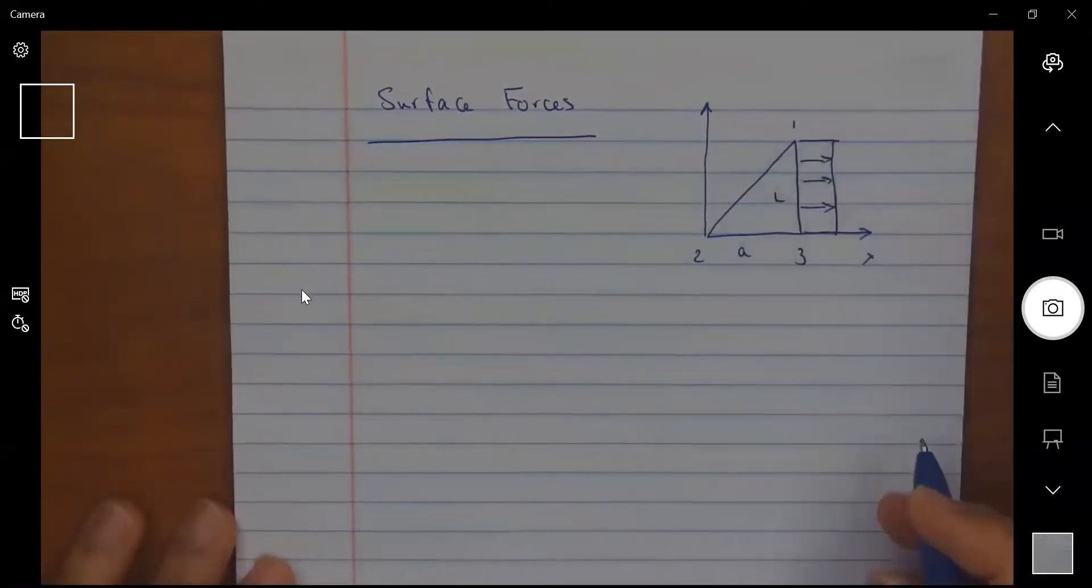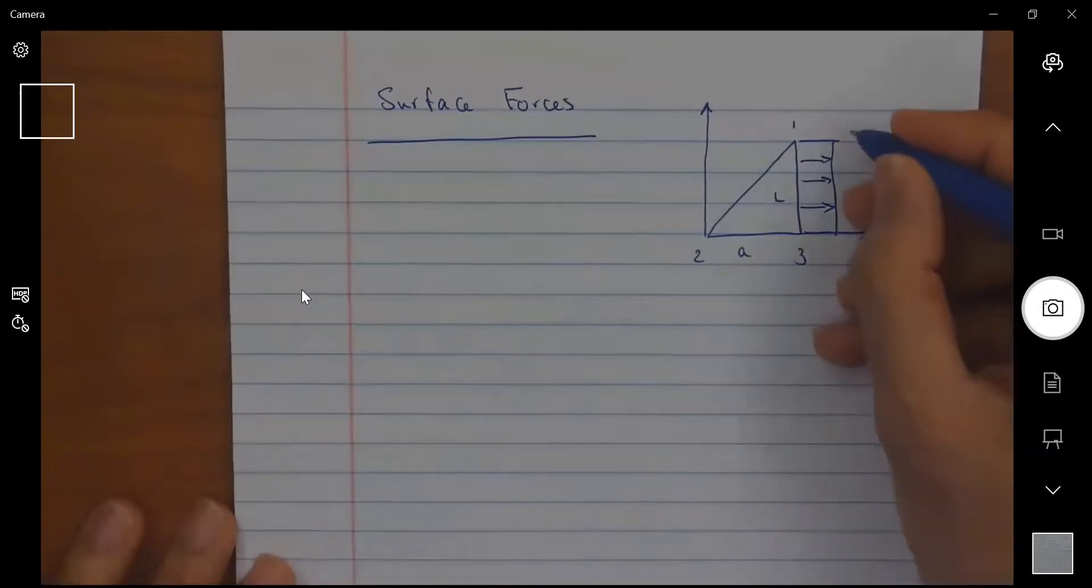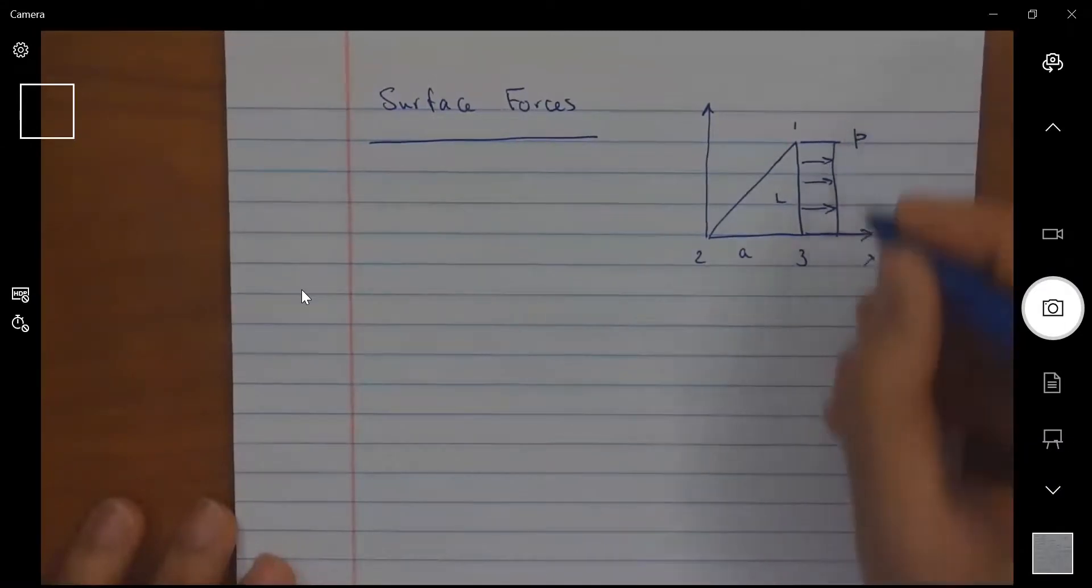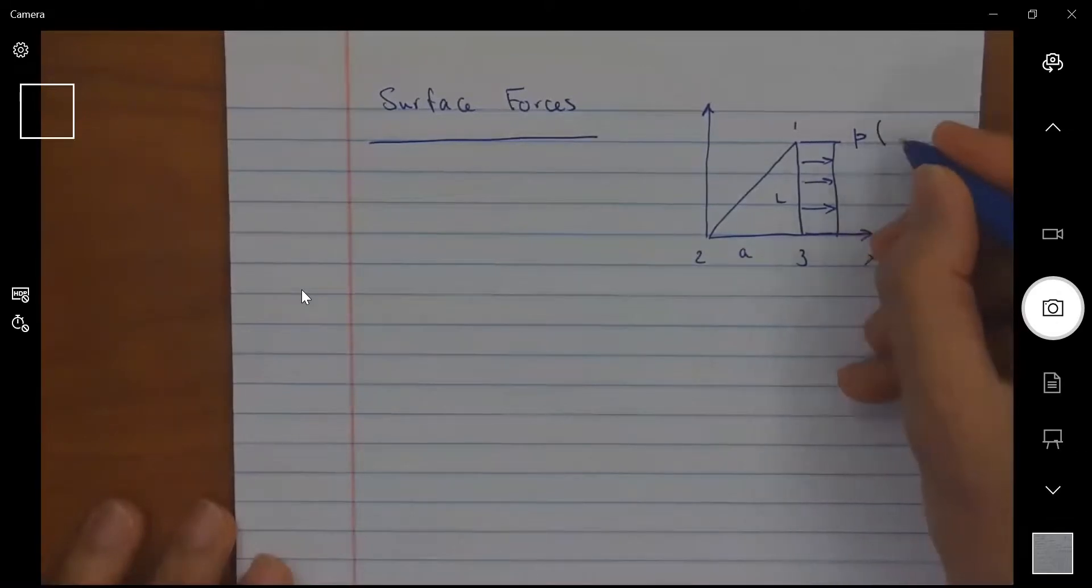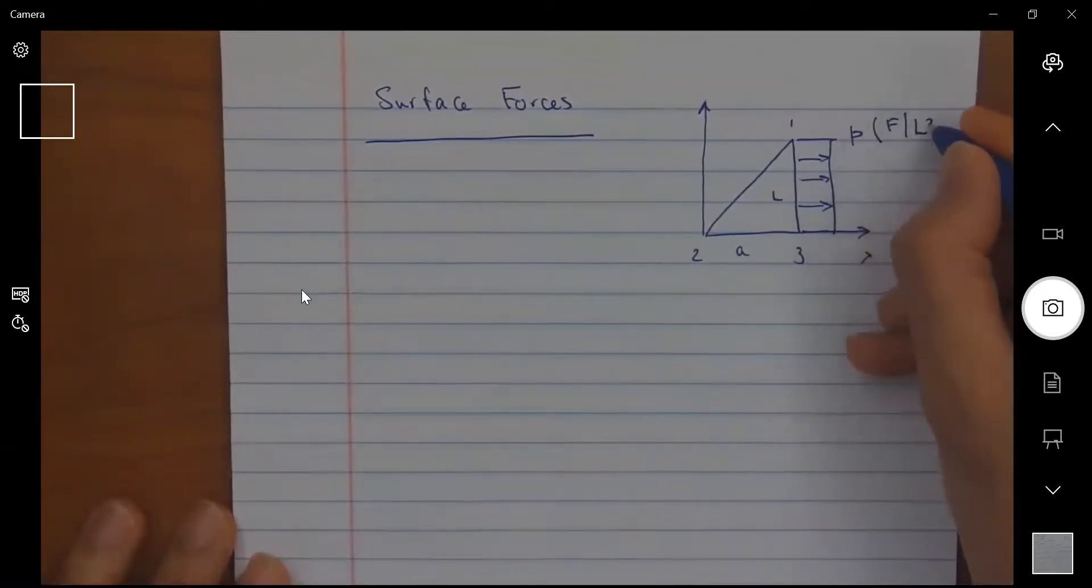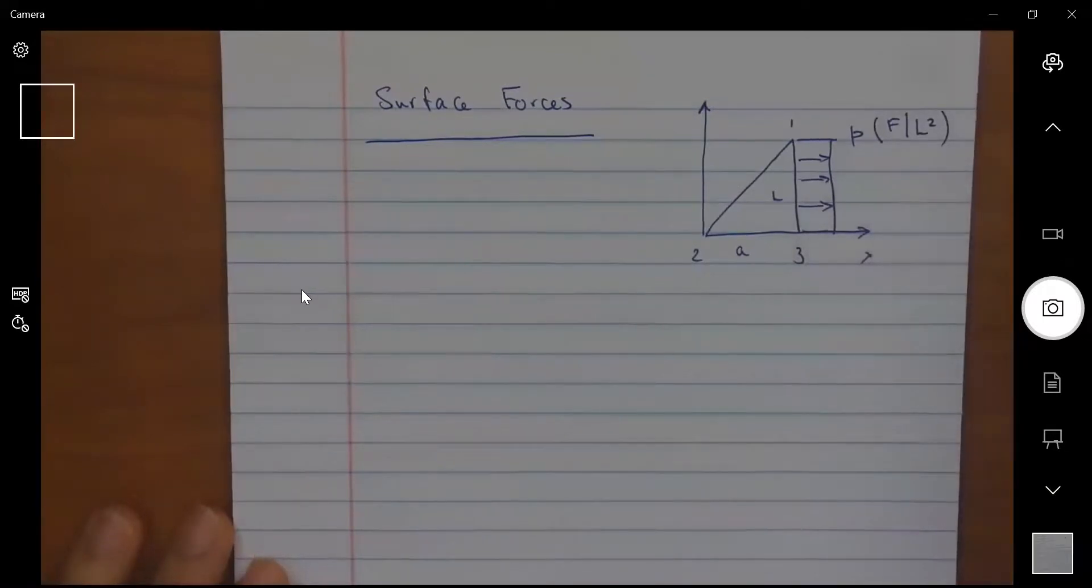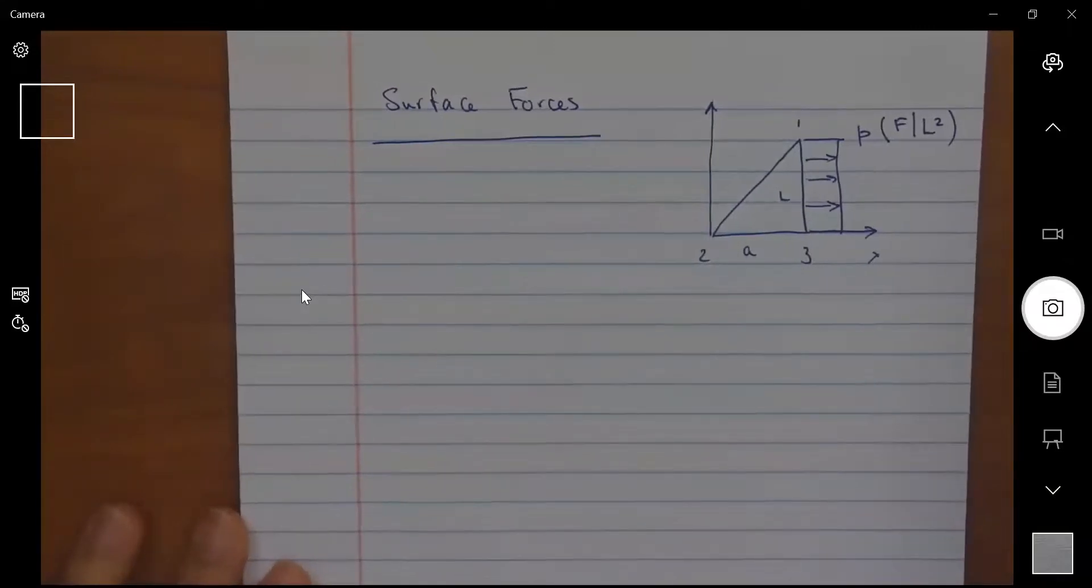And this traction force or surface force is represented by this lowercase p, and this will be given as force per length squared. So the body force was force per L cubed. This is force per length squared.